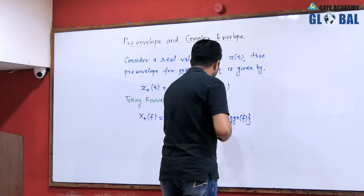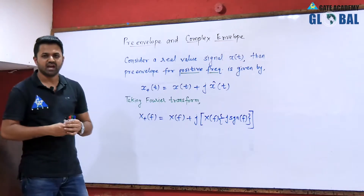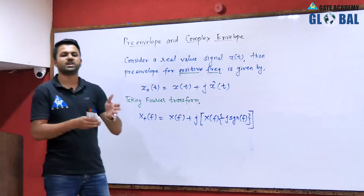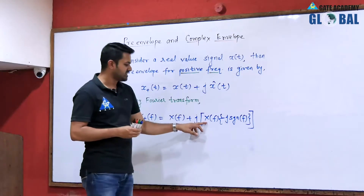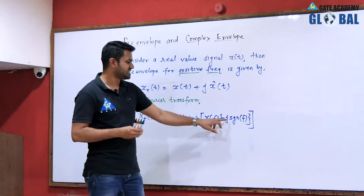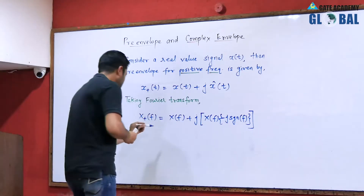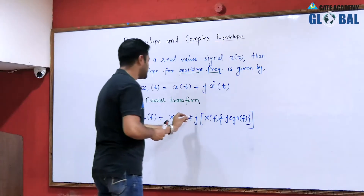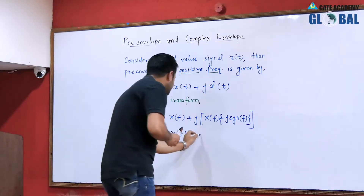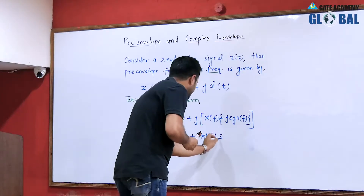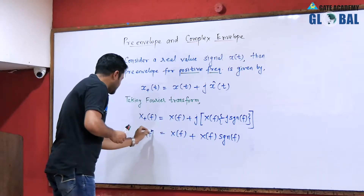To calculate the Hilbert transform in the frequency domain, we multiply positive frequencies by −j and negative frequencies by +j, which is equivalent to multiplying the spectrum of the signal by −j·sgn(f). So we multiply x(f) by −j·sgn(f). Solving this, the minus signs and j² = −1 give a plus, and we get x+(f) = x(f) + x(f)·sgn(f). This is the pre-envelope for positive frequency in the frequency domain.